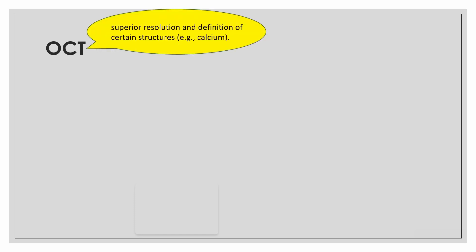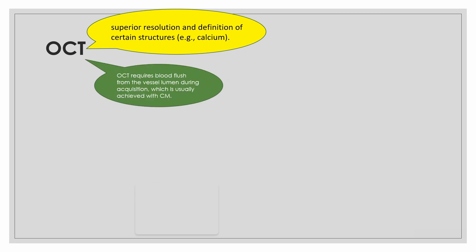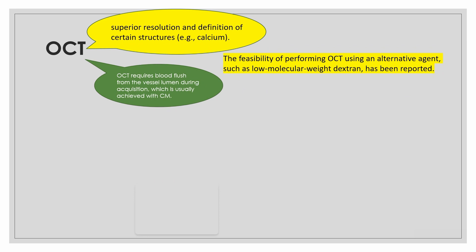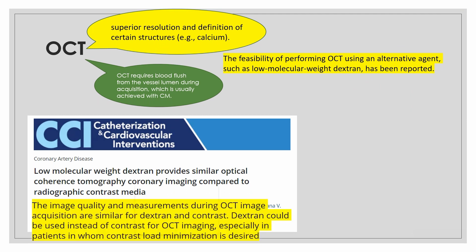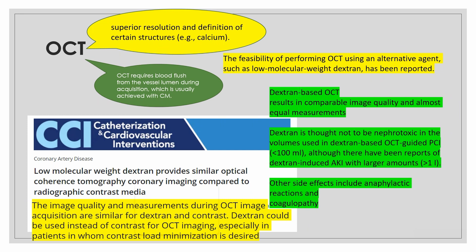OCT has the advantage of superior resolution and better definition of structures like calcium; however, it requires periodic flushing using contrast media. Low molecular weight dextran has been studied as an alternative flushing agent. A 2013 study found that image quality and measurements from dextran-based OCT are similar to conventional OCT. Notably, although dextran is not nephrotoxic, it can induce AKI if used in very large amounts. Side effects may include anaphylactic reactions and coagulopathy.